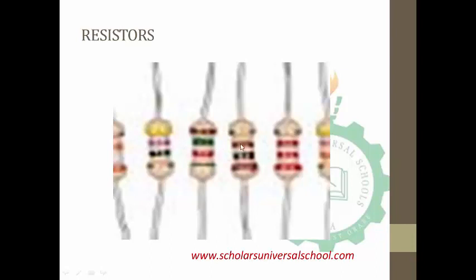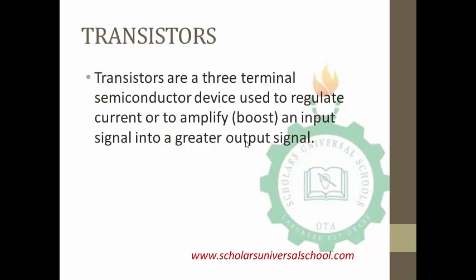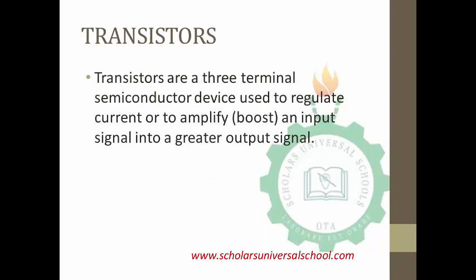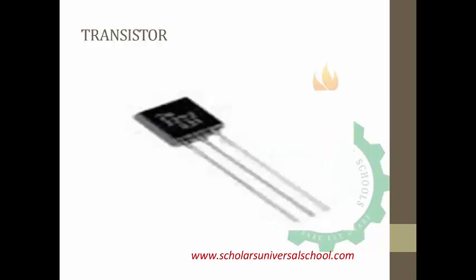Resistors are mostly found in an electronic circuit. The next device we will be talking about are transistors. Transistors are a three-terminal semiconductor device used to regulate currents or to amplify and boost an input signal into a greater output signal. As shown in our picture, it has three terminals: the base, the collector, and the emitter.